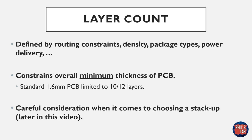Let's start with the layer count. Our layer count is defined by our product type, routing constraints, density, package types, power delivery requirements, and so forth. These days you would typically want at least a four-layer board for most designs, unless they're very simple. A four-layer board is fairly close in price to a two-layer board anyway. The layer count also constrains the overall minimum thickness of the PCB — for up to about 8 or 10 layers you can use a standard 1.6mm board, but at 12 or more layers your PCB will need to get thicker due to extra dielectric and copper materials.